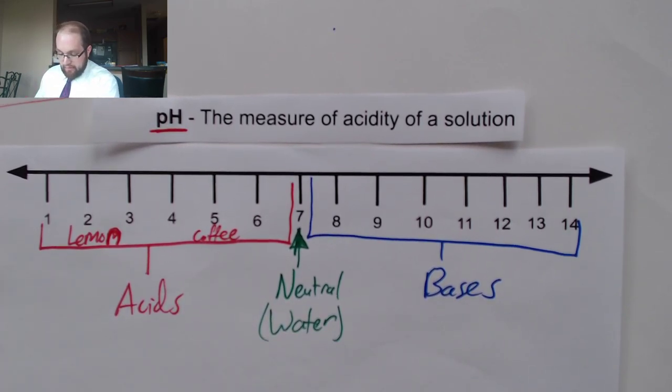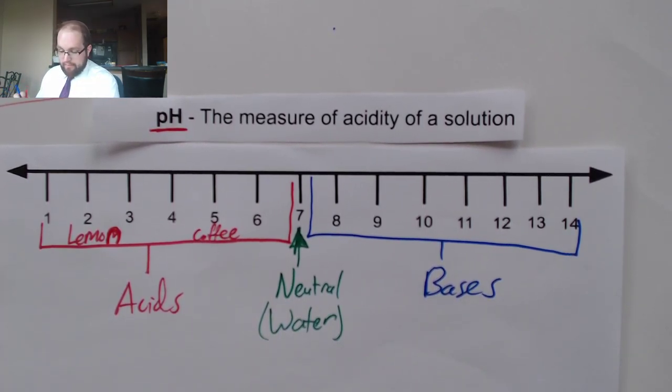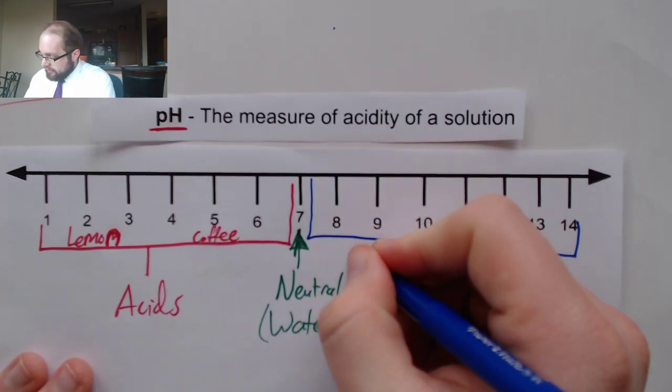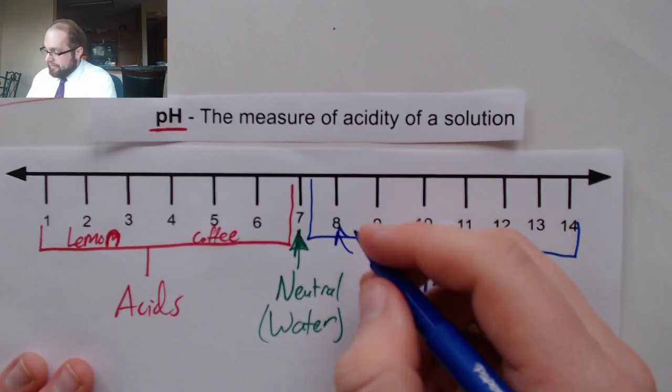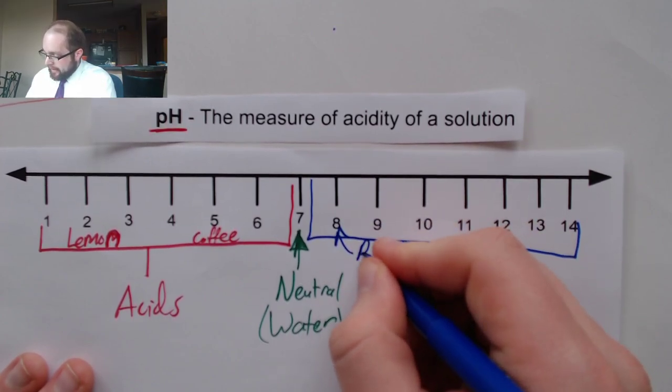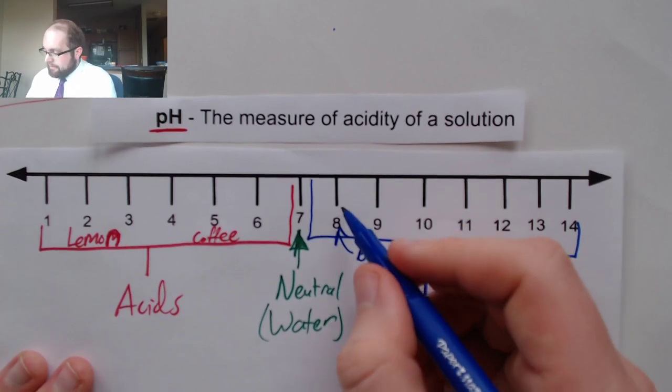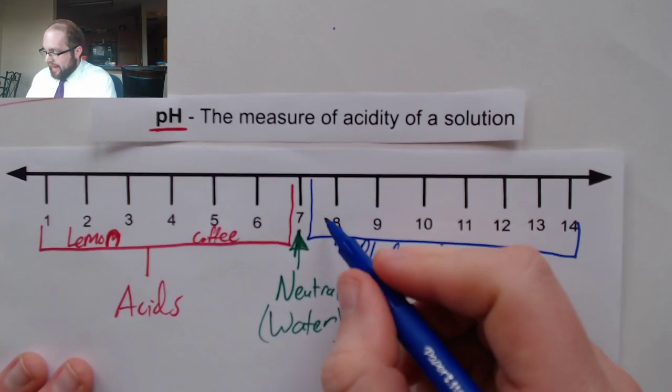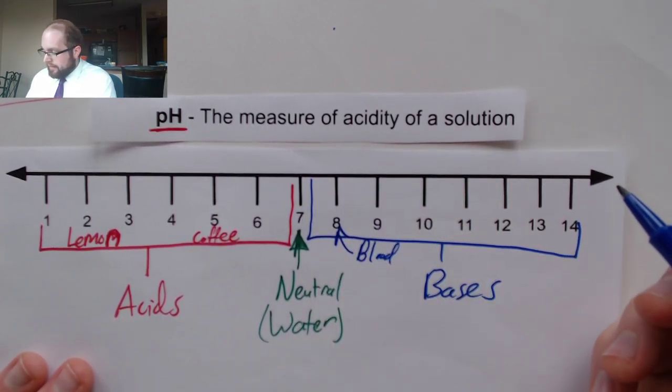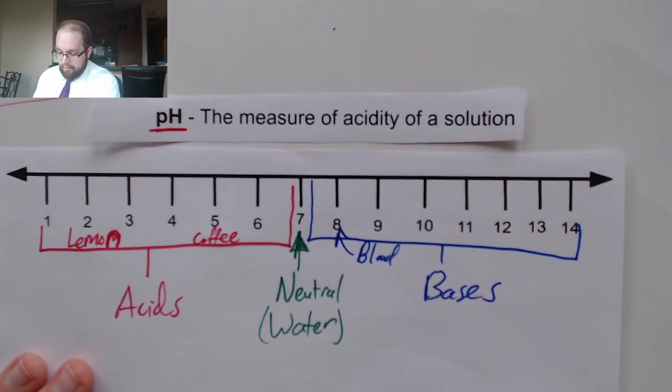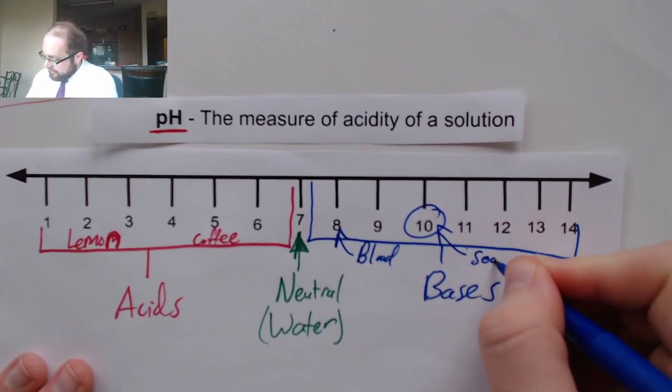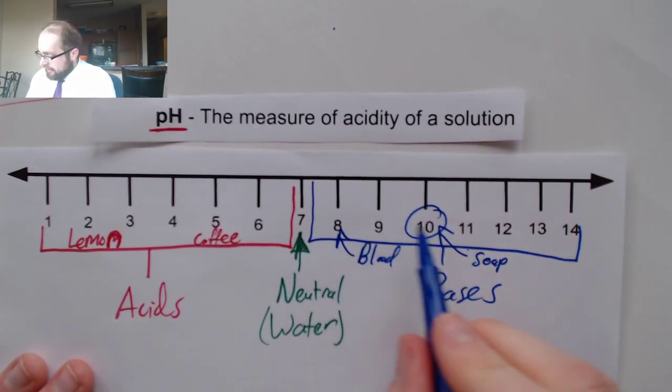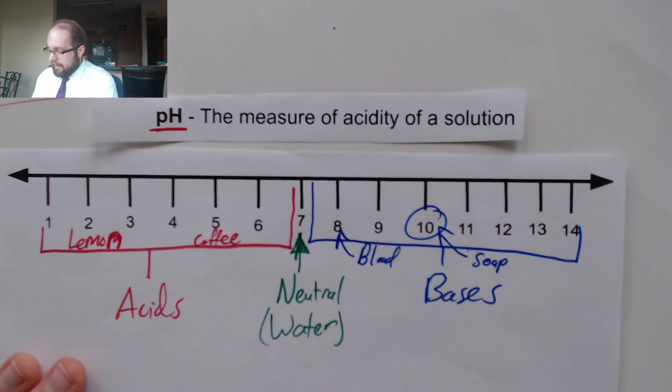Now bases, some common examples of some bases. Something that is not super acidic but not very basic would be examples of things like blood. Blood has a pH about 8, so it's slightly more basic than normal water. Whereas when you look at something like soap, a soap is going to have a pH of around 10. That'll be more basic as an example.